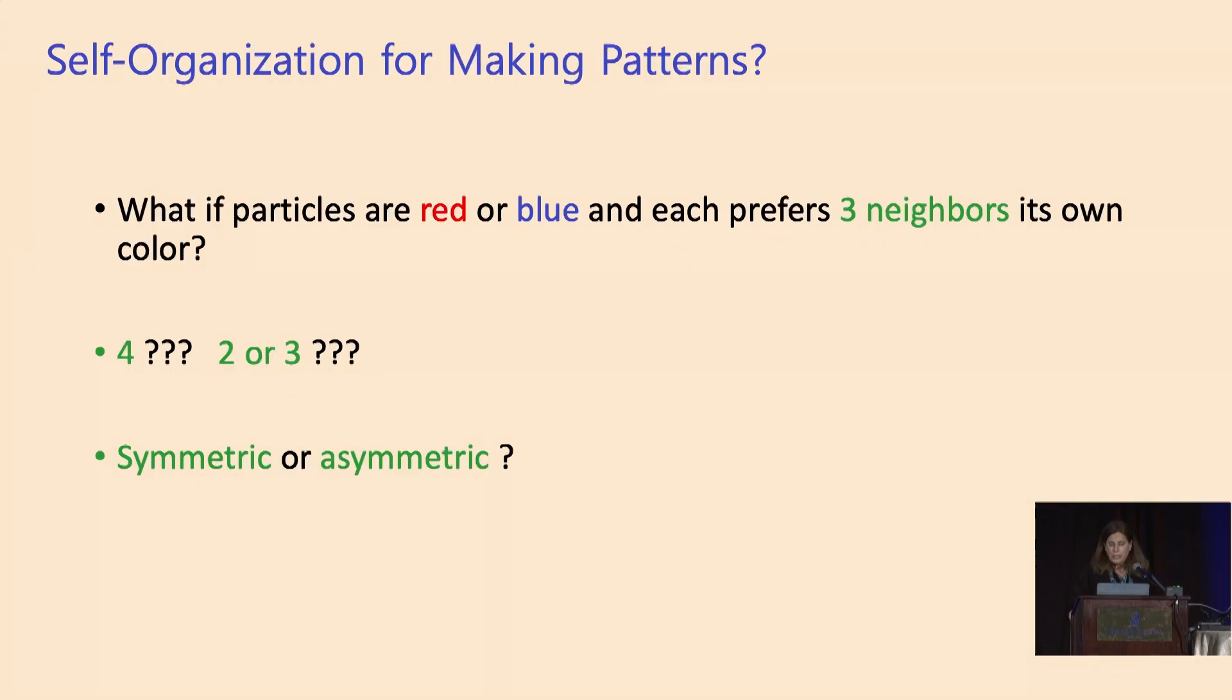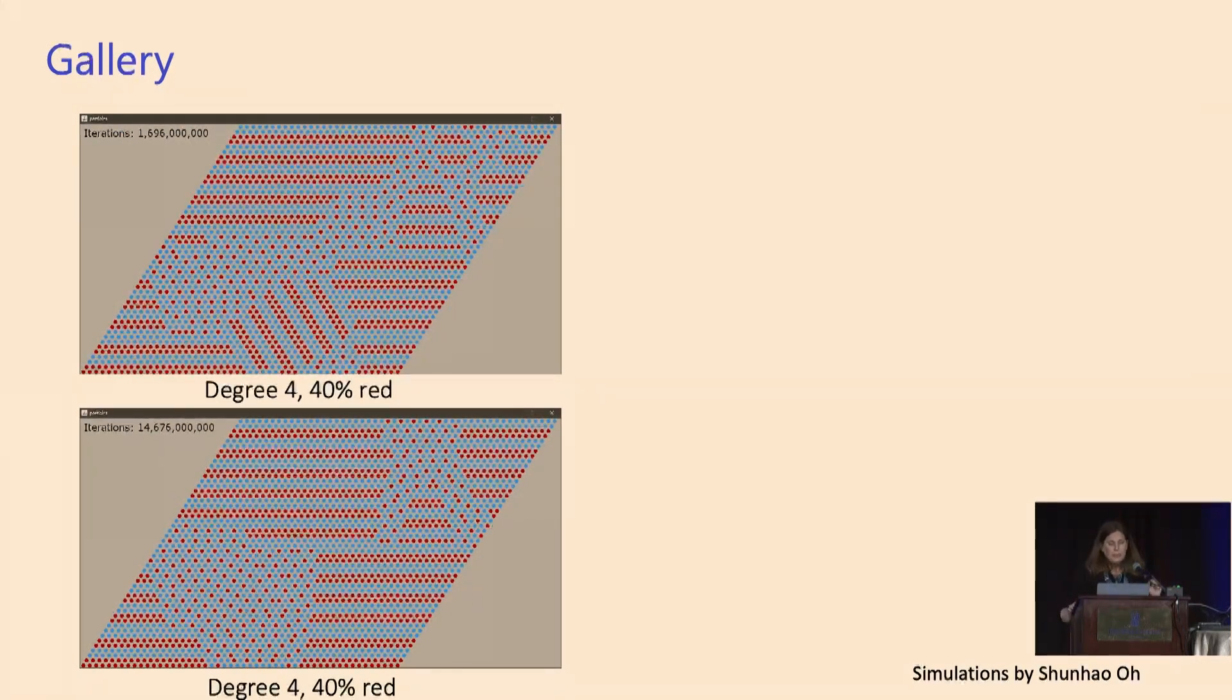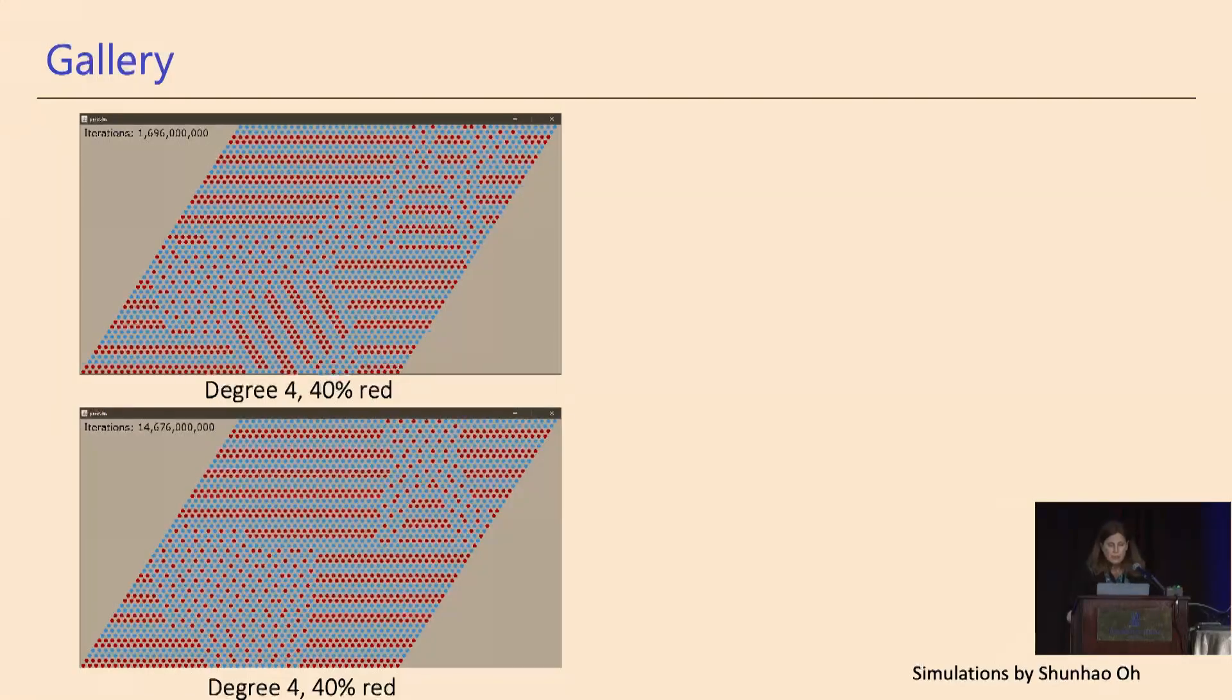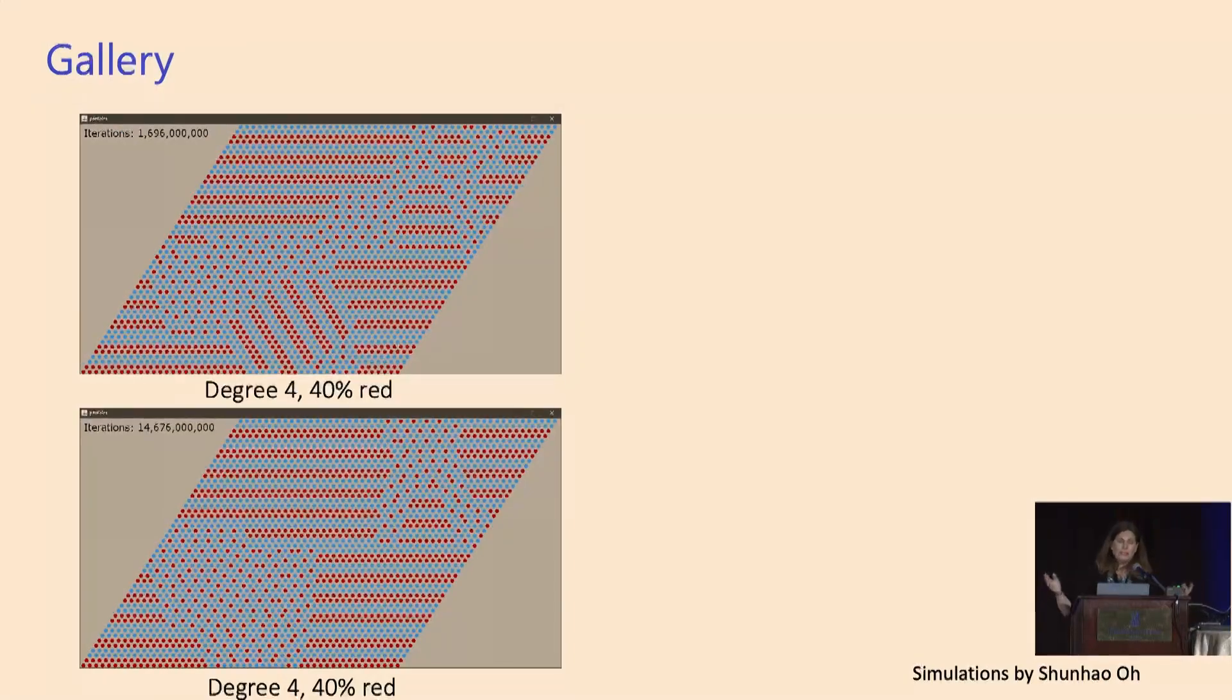This is what happens if you're favoring degree four. In the top, in both pictures here, we have 40% red vertices, and the remaining are blue, 60%. And we just ran an algorithm that runs this type of algorithm that I showed you previously. It's not for gathering, but it's more for making these patterns. And you could see that on the top, it begins to look like an American flag, I think.